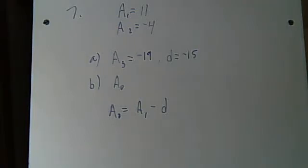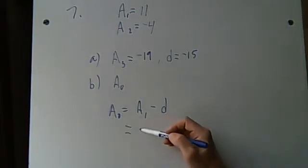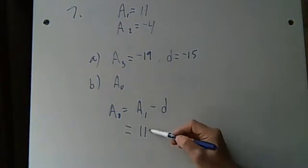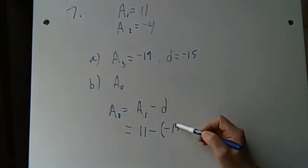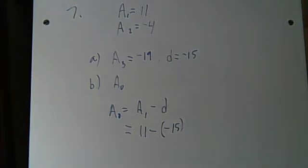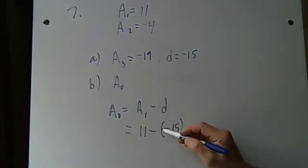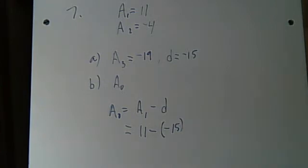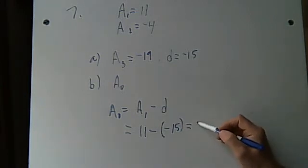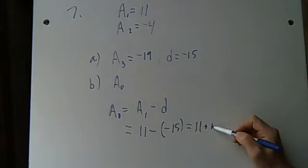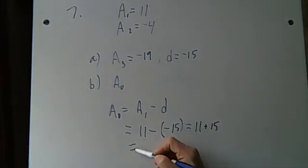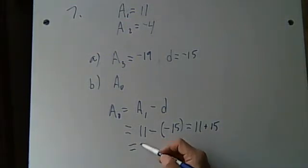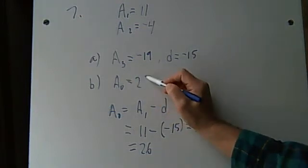So a0 is gonna be a1 minus D. So a1 we know is 11. Minus. Now here's another thing that's a trick with the negative number. You have to subtract, but you're subtracting a negative 15. So I like to do that with parentheses. So I get the two negatives. That way I can just turn it into the positive. Plus 15. And that's gonna be 26. So a0 is gonna be 26.